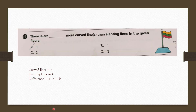Question number 14: There are how many more curved lines than slanting lines in the given figure? We have 1, 2, 3 and 4 curved lines. Slanting lines: 1, 2, 3 and 4. There are 4 curved lines and 4 slanting lines. So 4 minus 4 is 0. There are 0 more curved lines than slanting lines. Our answer is option A, 0.